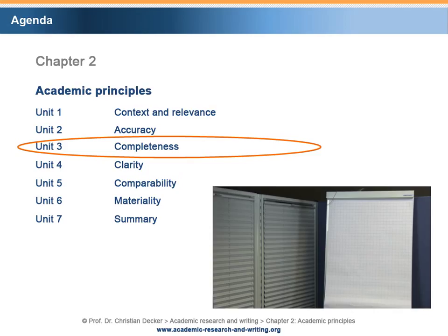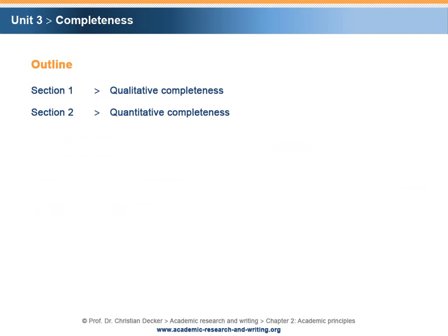In Unit 3, we will familiarize ourselves with the academic principle of completeness. This unit is divided into two sections. Section 1: Qualitative completeness.